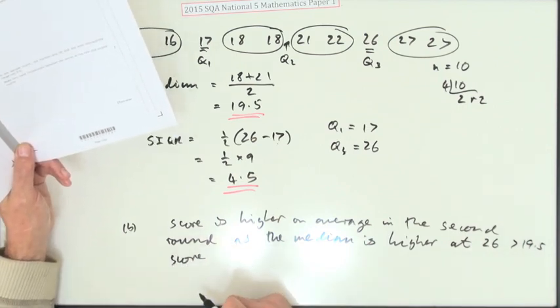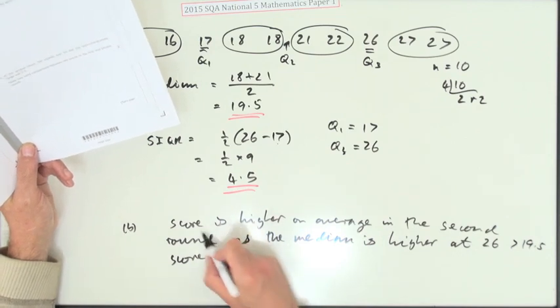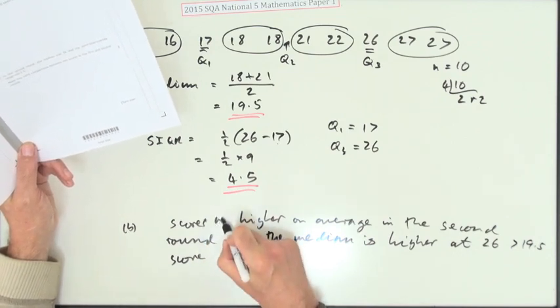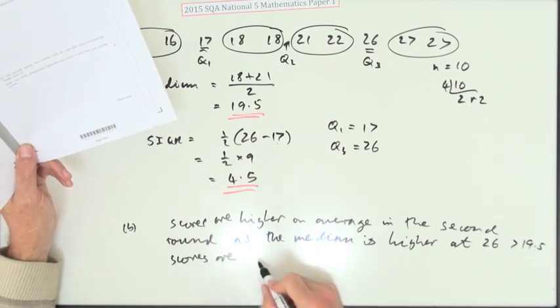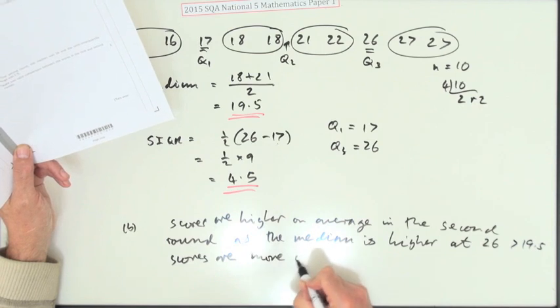And it's the same for the second. But what can you say about the scores in the second round? The scores, maybe I should have said the scores are, in the second round, the scores are less spread out, or you could say they're more consistent, which is better of course.